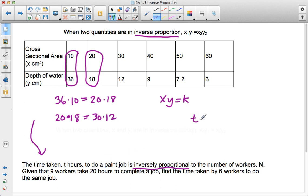So we know that t hours, so t₁ times n₁ is going to equal t₂ times n₂. So we know that it takes 9 workers 20 hours to complete a job. So in our first proportion, we have 9 times 20. Find the time taken by 6 workers to do the same job, so n₂. Or you can just label it as n if you like.